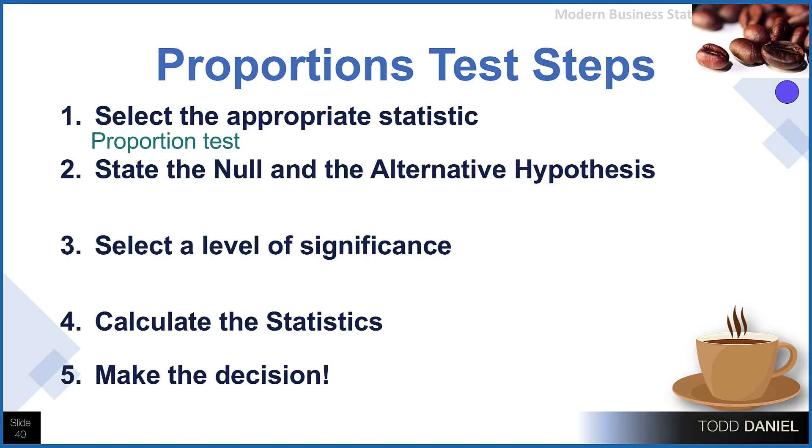The null hypothesis will be H₀: p = 0.8. And our alternative hypothesis will be H₁: p ≠ 0.8. Remember that 0.8 is our population proportion. The level of significance will be using a two-tailed test and an alpha of 0.05, giving us a critical value of 1.96 in either direction.